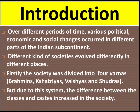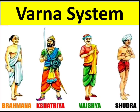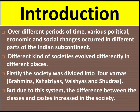The society was divided into a four-varna system: first, Brahmins; second, Kshatriyas; third, Vaishyas; and fourth, Shudras. Brahmins, who have the knowledge of texts and Vedas, were considered the highest varna in Indian society. Kshatriyas are the warriors who fought in wars and protected the people. Due to this varna system, the difference between classes and castes increased in society.